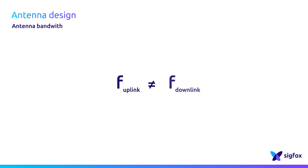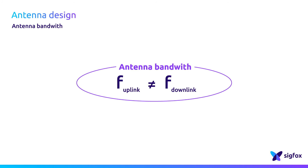Thirdly, the antenna bandwidth. Sigfox is a two-way communication service enabling devices to perform uplink and downlink communication. The uplink and downlink operation bands are not the same — they are usually separated by one or two megahertz. As a consequence, the antenna must operate in both frequencies without any problem. Most antennas in the market have a bandwidth much larger than one or two megahertz. An antenna that covers a larger bandwidth than required will be less sensitive to manufacturing tolerances as well as detuning caused by the antenna environment. Therefore, it is a good idea to select an antenna which covers more than only the required bandwidth.